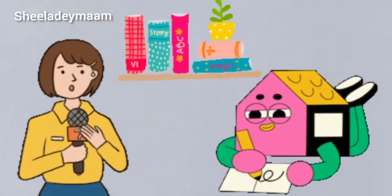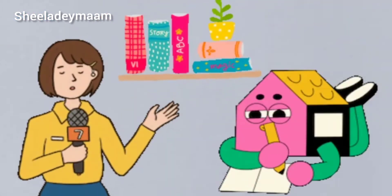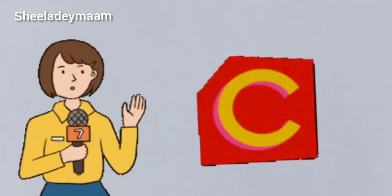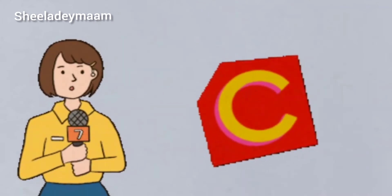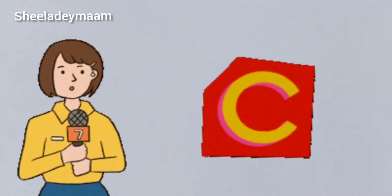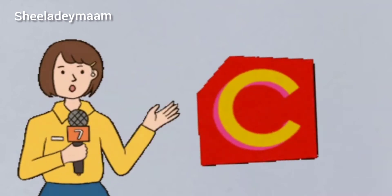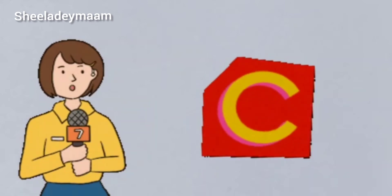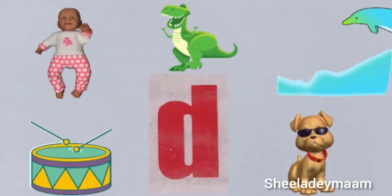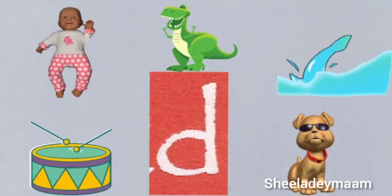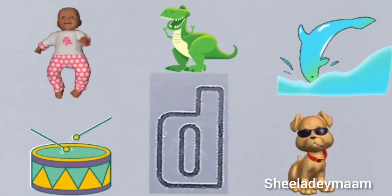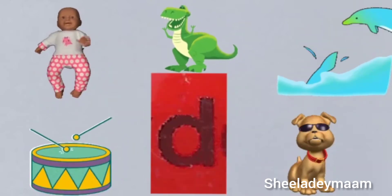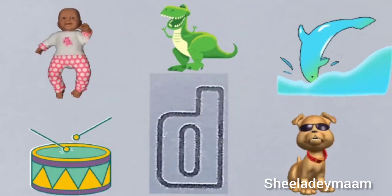Now tell me children, which letter we did last time? Yes children, letter C. We did letter C last time. Now tell me, which letter comes after C? It is the letter D. Today I will teach you letter D, the sound of D, and the formation of letter D.